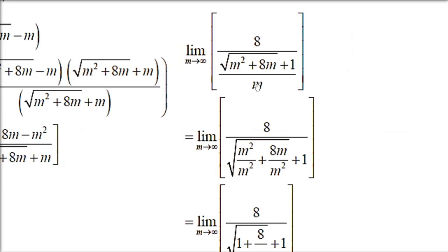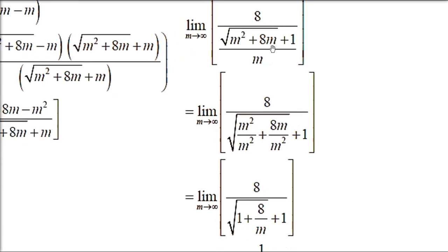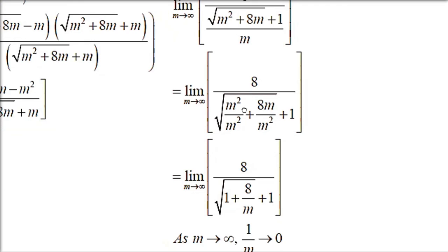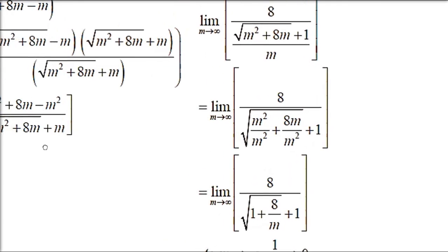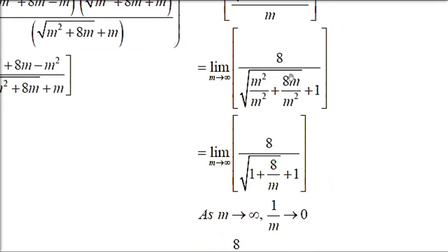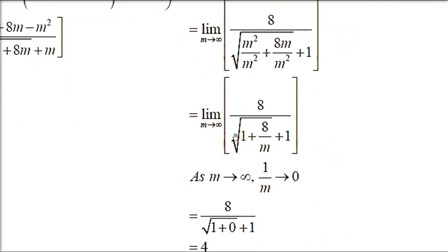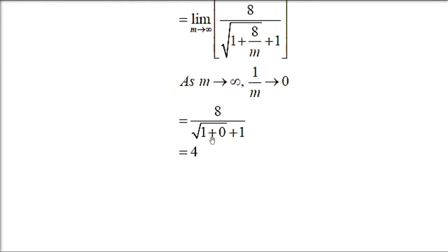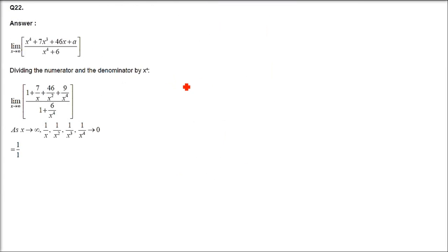Apply rationalization — same process as the previous question. Take m in the denominator, m inside the under root becomes m square. You get 1 over under root(1 plus 8/m) plus 1. Now apply infinity: 8 by m is 0, so 8 over under root(1 plus 0) plus 1, which is 8 over under root 1 plus 1, that is 8 over 2, which equals 4.